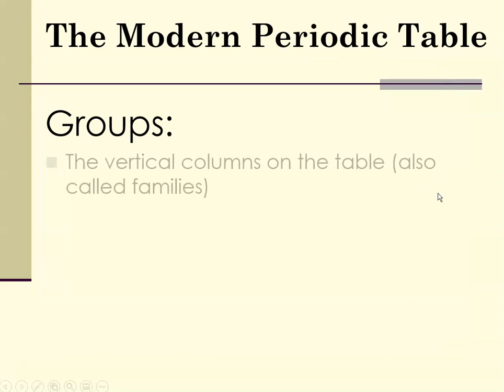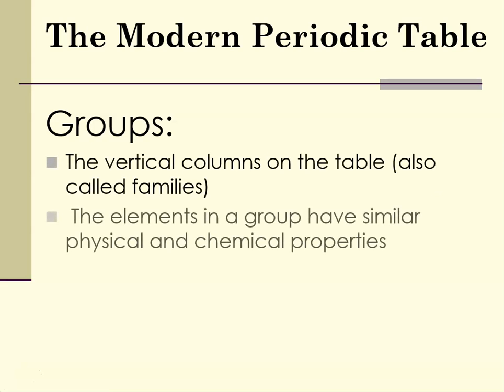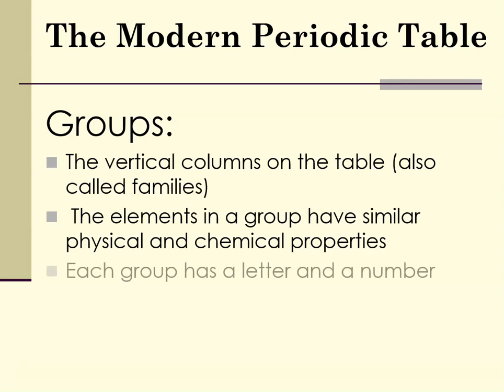The groups are the vertical columns, also sometimes known as families. The elements in a group have similar physical and chemical properties. Each group has both a letter and a number, depending on which periodic table you pick up. Some will have 1A through 8A and then 1B through 10B. The periodic table we will be using uses the modern numbering system, which is groups 1 through 18, going from left to right across the table.